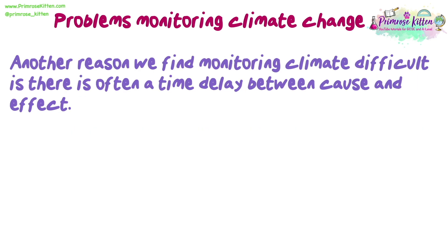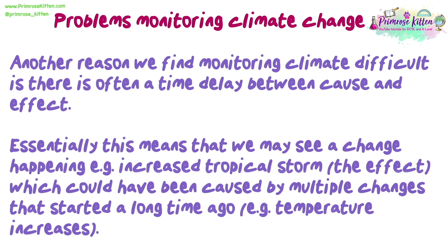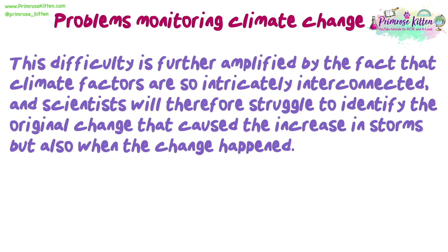Another reason we find monitoring climate difficult is there is often a time delay between cause and effect. This means that we may see a change happening — for example, increased tropical storms, which is the effect — which could have been caused by multiple changes that started a long time ago, such as temperature increases. This difficulty is further amplified by the fact that climate factors are so intricately interconnected, and scientists will therefore struggle to identify the original change that caused the increase in storms, but also when the change happened.